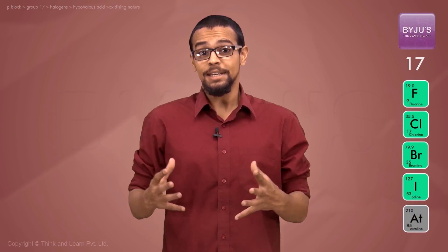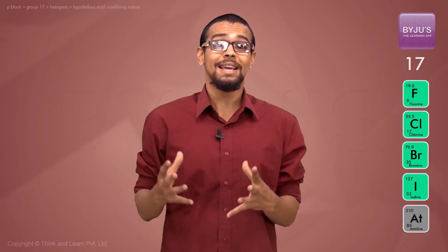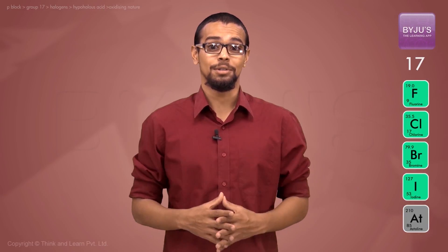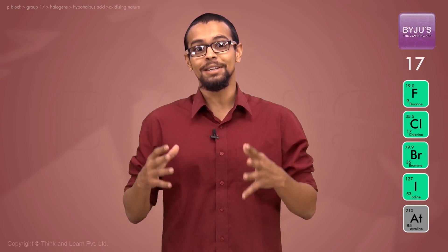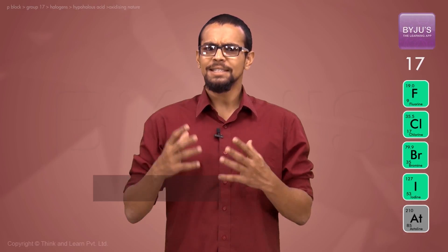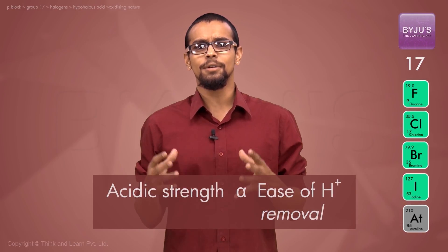Let's now compare the acidic character of different oxyacids of the same halogen with different number of oxygens—in other words, of the same halogen present in different oxidation states. Now, acidic character as such involves the loss of the H+.